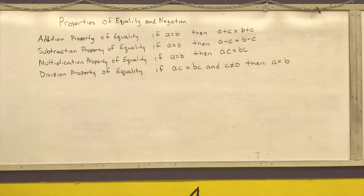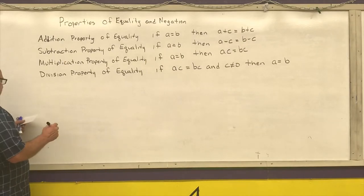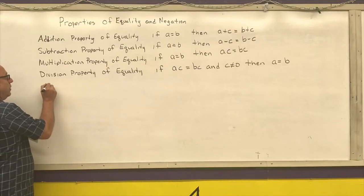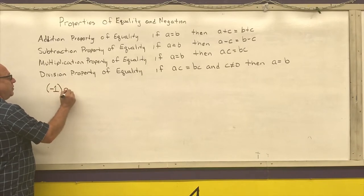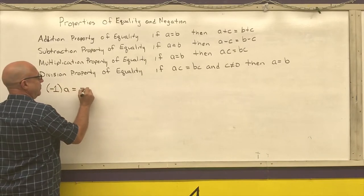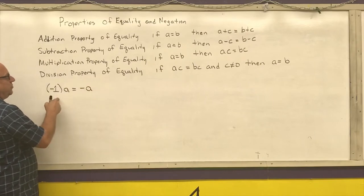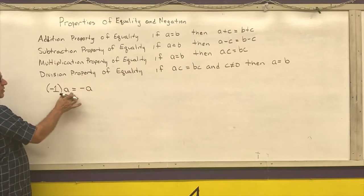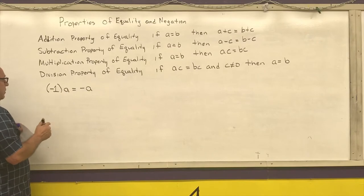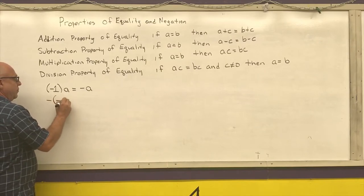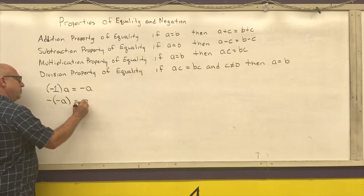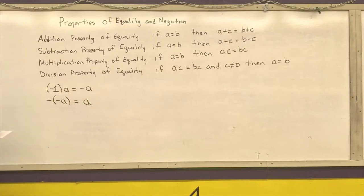So those are our four properties of equality. Our properties of negation are: negative one times a number is equal to that negative number, and these work both directions. Negative a means the same thing as negative one times a. The negative of a negative number is equal to a positive number.